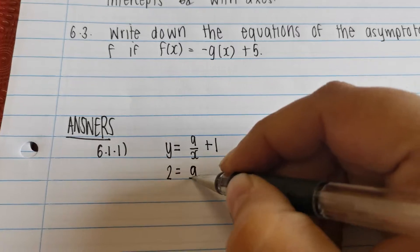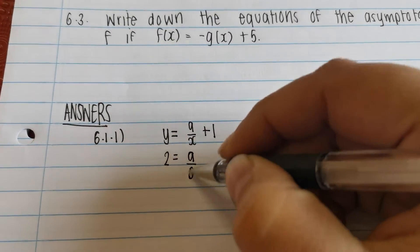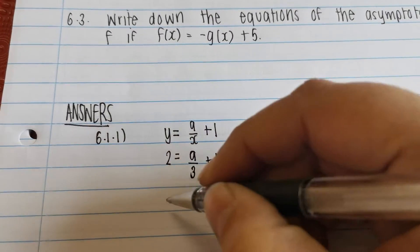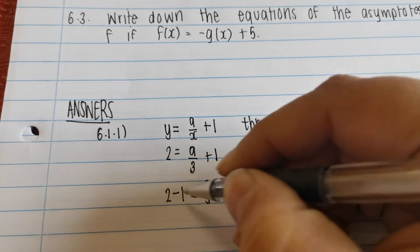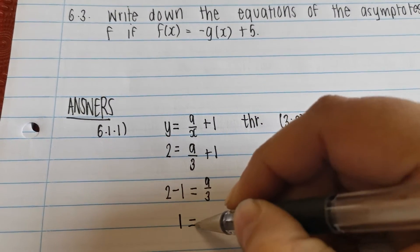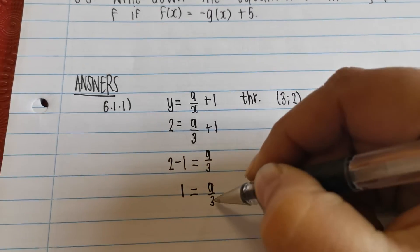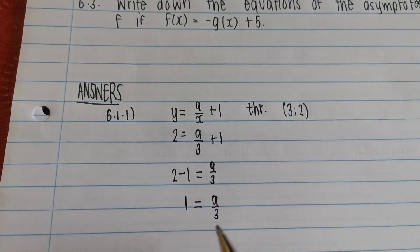So 2 is equal to a over, what's our x value? 3 plus 1. Take my 1 over. So 2 minus 1 equals a over 3. 2 minus 1 is 1 equals a over 3. I'm going to get rid of my 3. So I multiply both sides by 3,